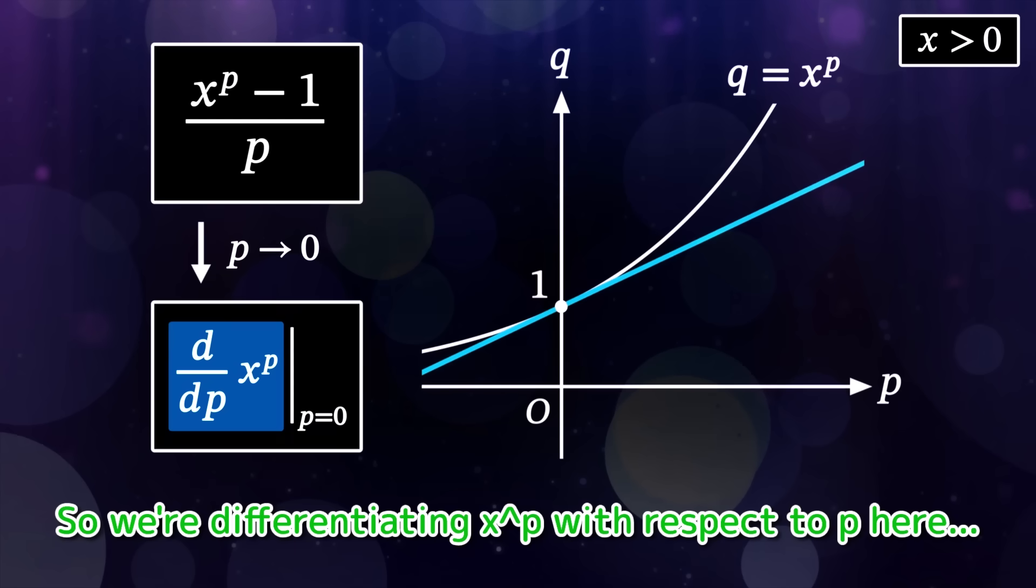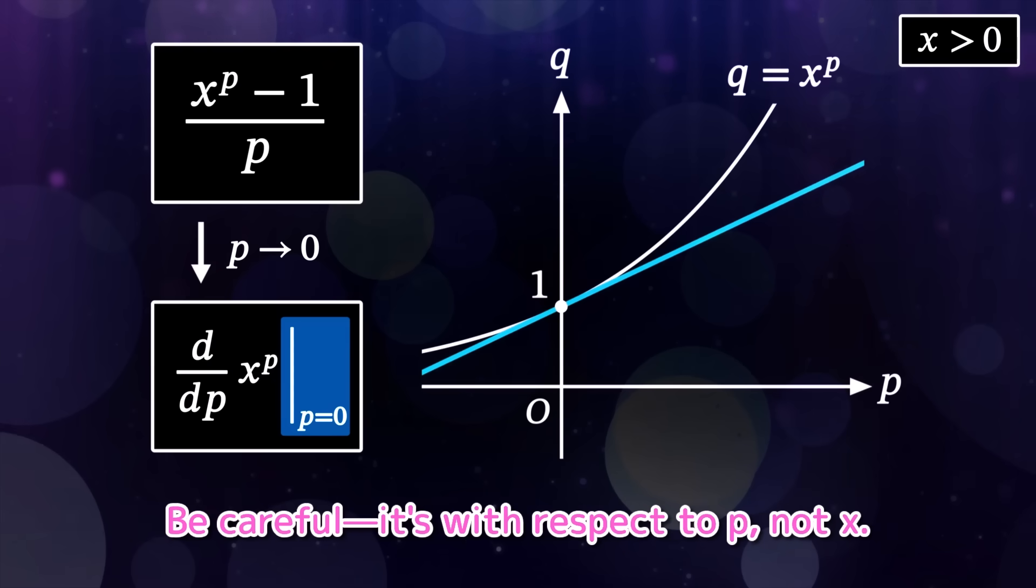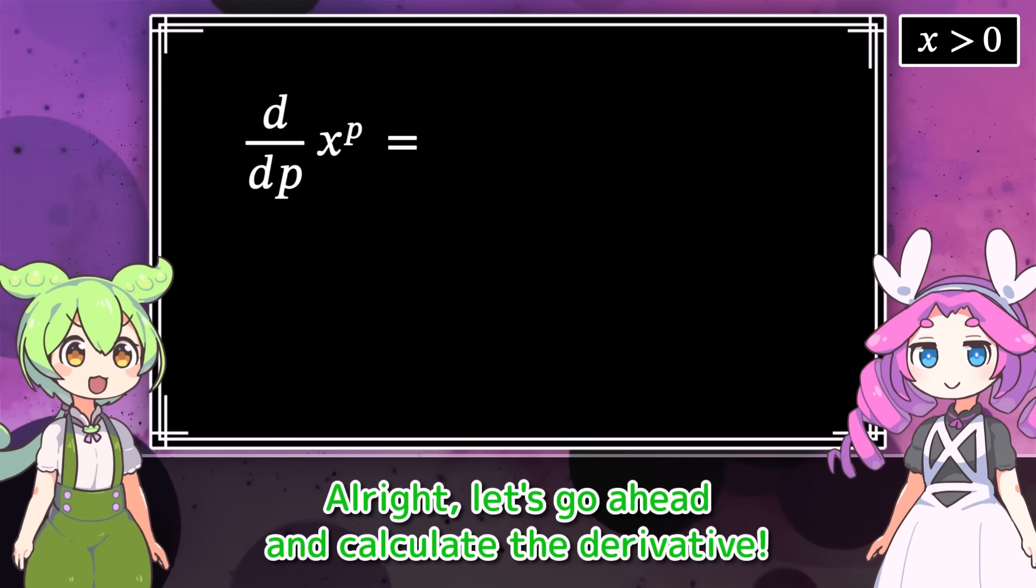Sounds good. So we're differentiating x to the p with respect to p here. And we're evaluating the derivative at p equals 0. Be careful, it's with respect to p, not x. Alright, let's go ahead and calculate the derivative.